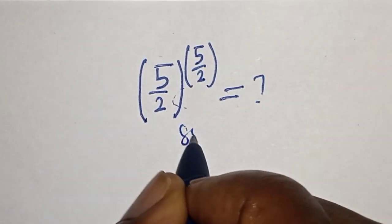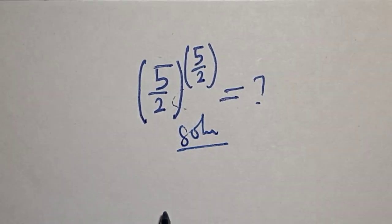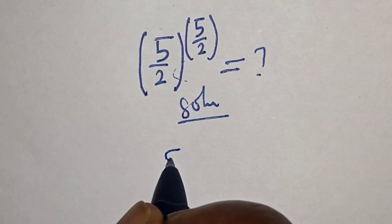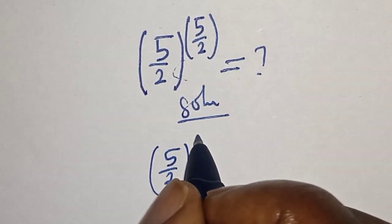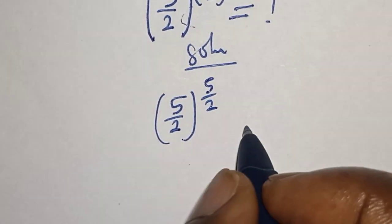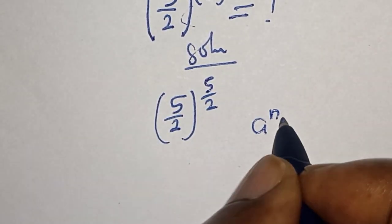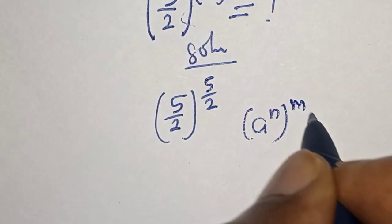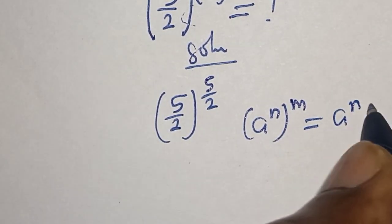For the solution, we have the given equation (5/2)^(5/2). Remember this rule: (a^n)^m equals a^(nm).